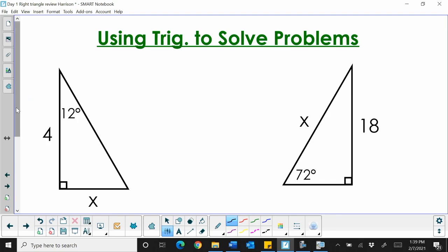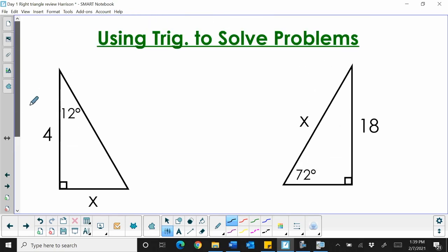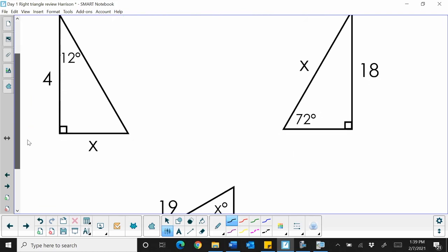Okay, so let's try a couple of these where we have to figure out which trig function. So using trig, solve these problems, and we're just solving for one variable. So if this angle is 12, this side is 4, which trig function would I use to find the missing side?